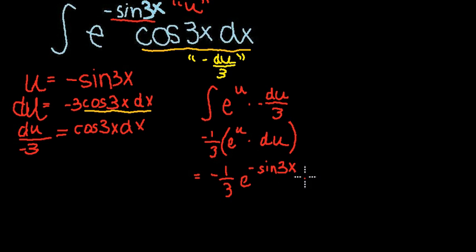So negative 1/3 e to the negative sine 3x, and we have a du, so we want to go ahead and add our c for the constant since we don't have limits. And that you will find to be our final answer. This is the antiderivative of e raised to the negative sine of 3x times cosine 3x dx.